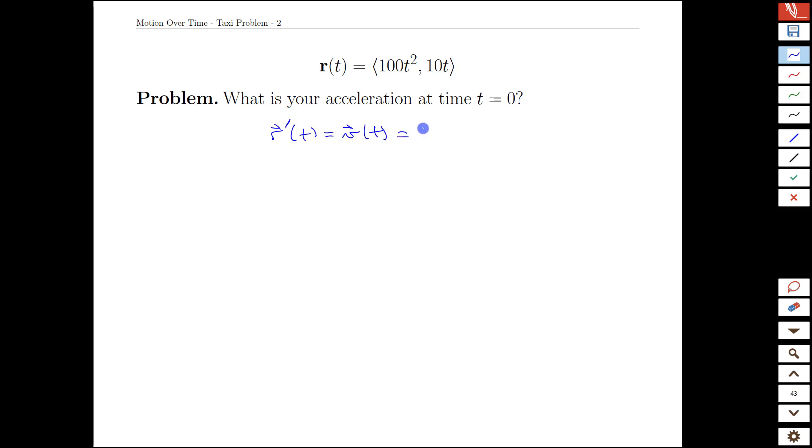That's straightforward. The derivative of 100t squared is simply 200t, and the derivative of 10t is simply 10. So our acceleration, which is our double prime of t, is going to be the derivative of 200t is 200, and the derivative of 10 is just 0. That's interesting.